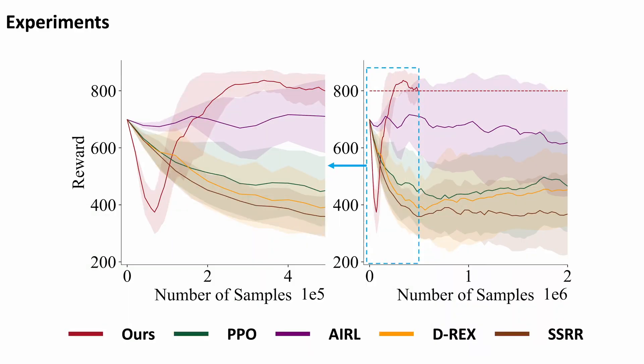We also plot the curve of the expected reward with respect to the number of samples. This shows that our algorithm can converge very fast with a much higher sample efficiency.